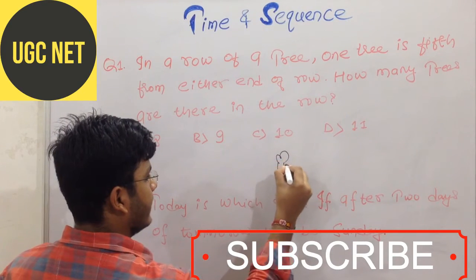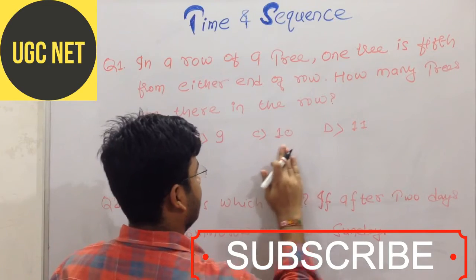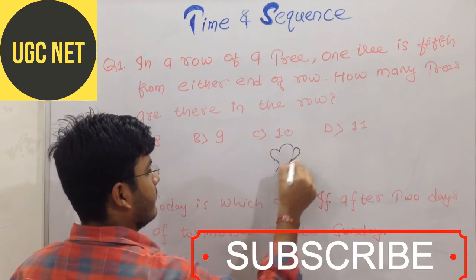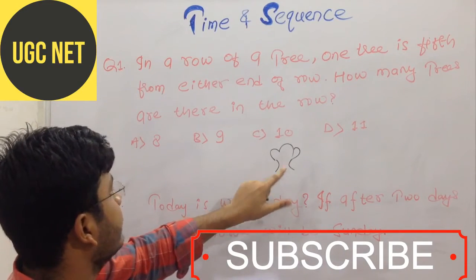Suppose this is a tree and this tree. Suppose this is a tree. Now if this tree is fifth from either end,